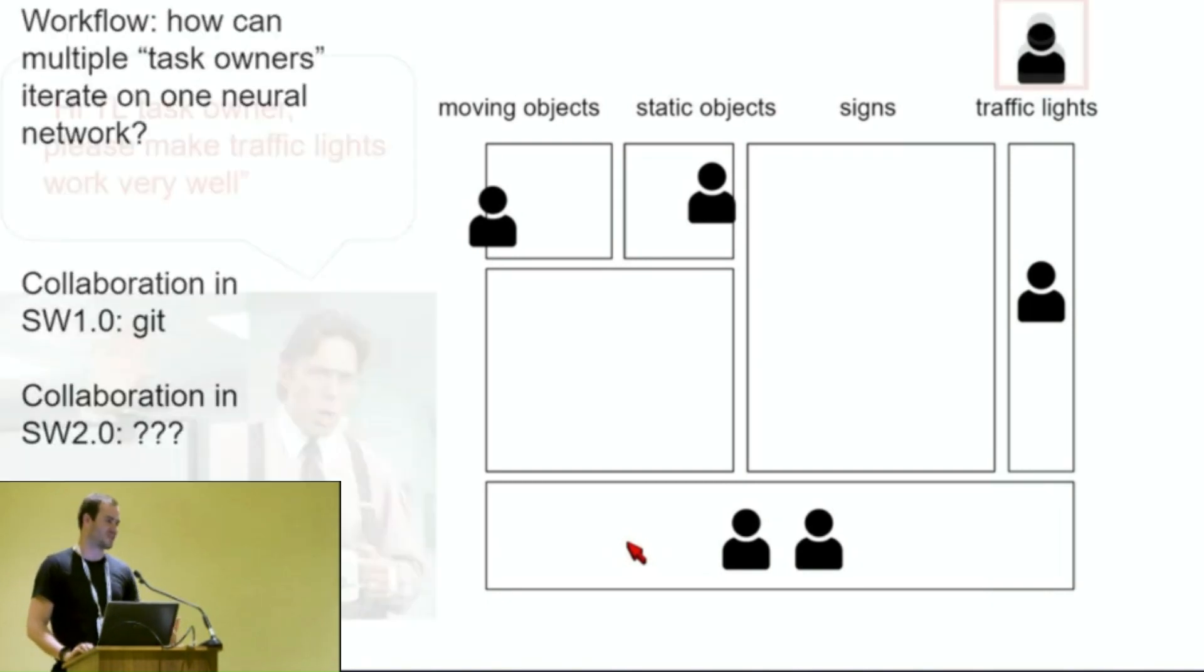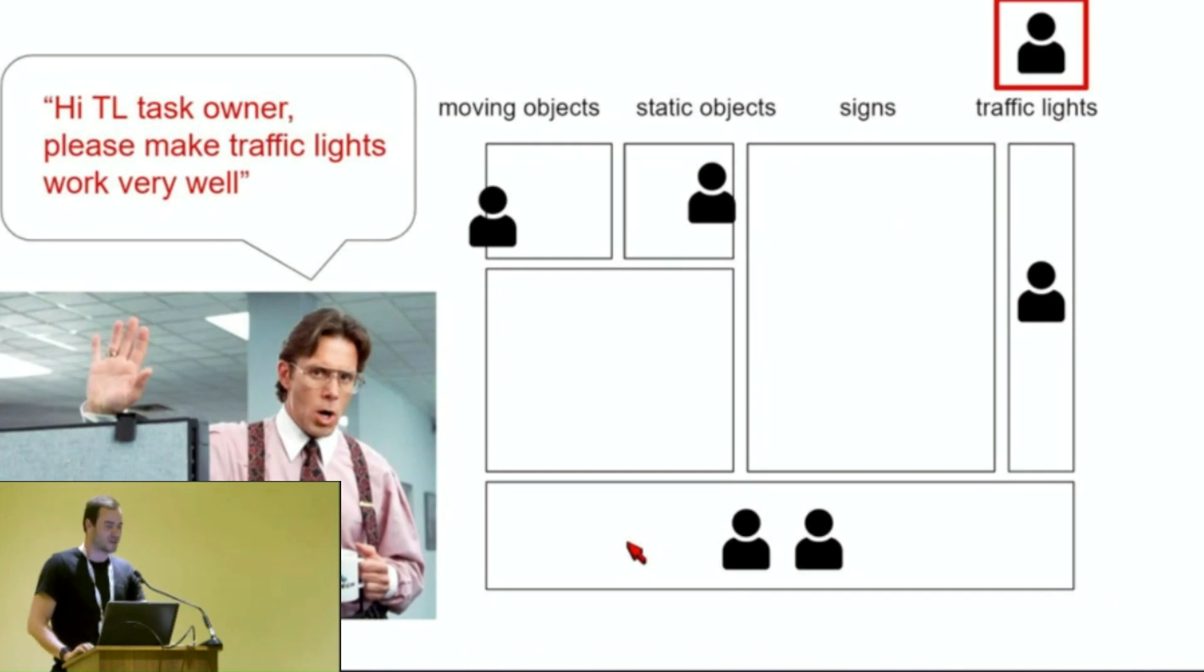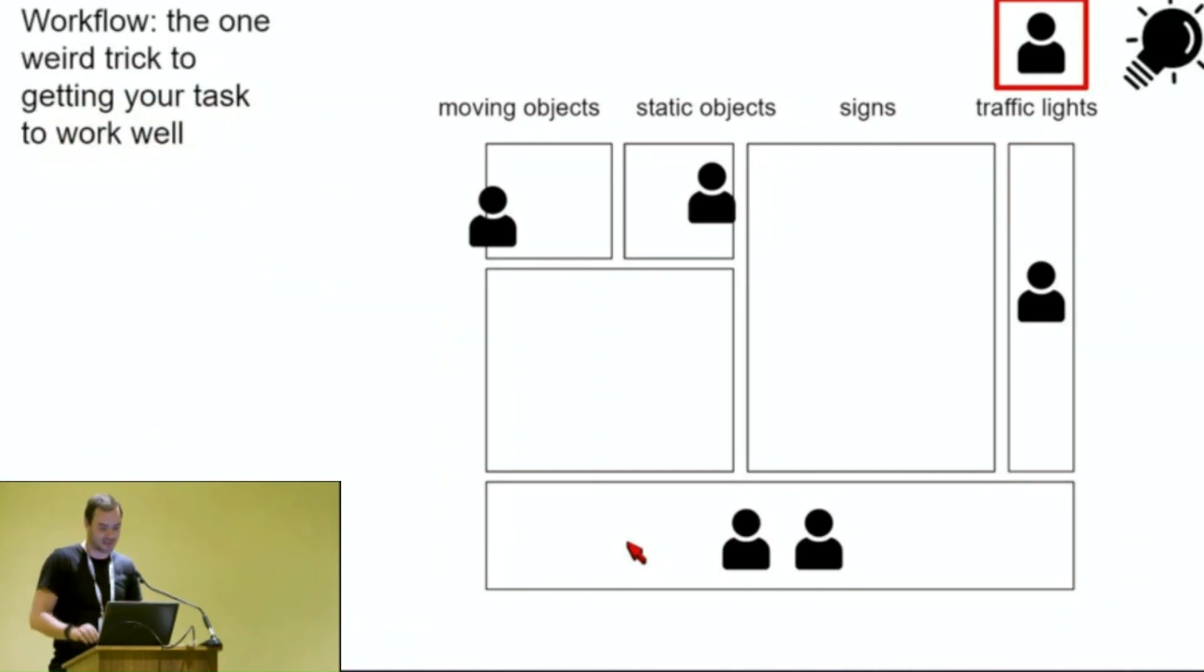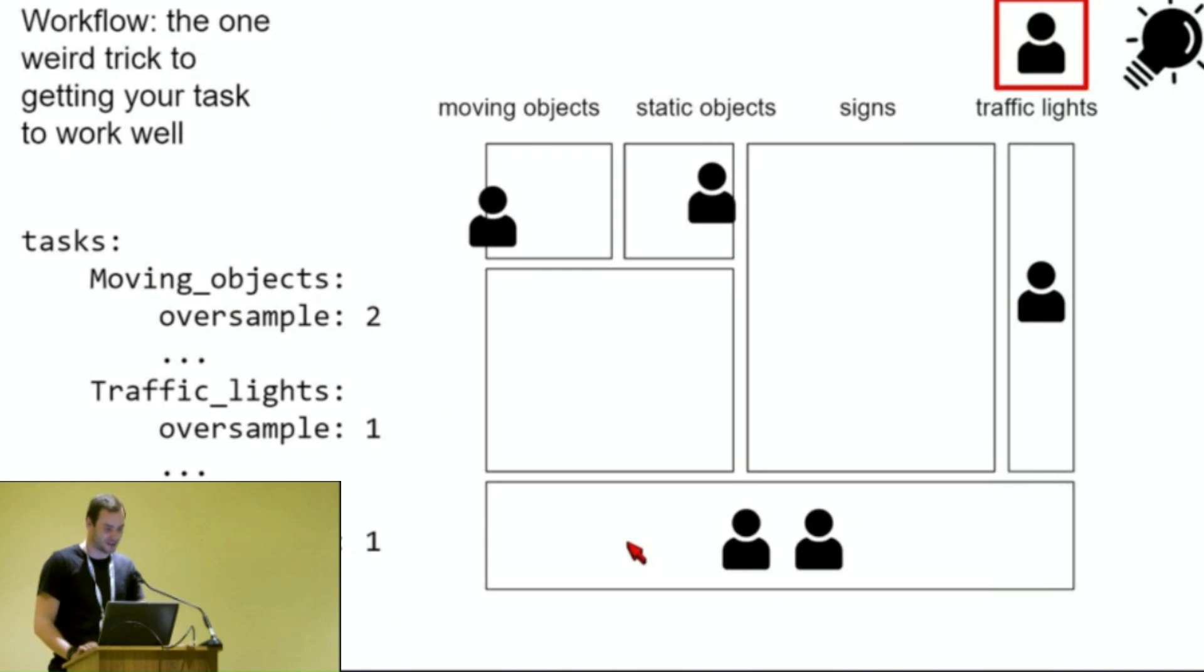Just a few interesting things that have happened in the team. As an example, I walk around, that's me on the bottom left over there. And I say, hi traffic lights task owner. If you could make traffic lights work a bit better, that would be great. And there are many tips and tricks to actually getting your tasks, the one that you own and you want to work very well, to work well. So the traffic lights owner has an idea and they go to the configuration file where you list all the different tasks. And as I mentioned, we have different oversampling ratios for different tasks. So you just go to the traffic lights and you see your oversample is just one. So you make that two. And that means your task will be trained more.